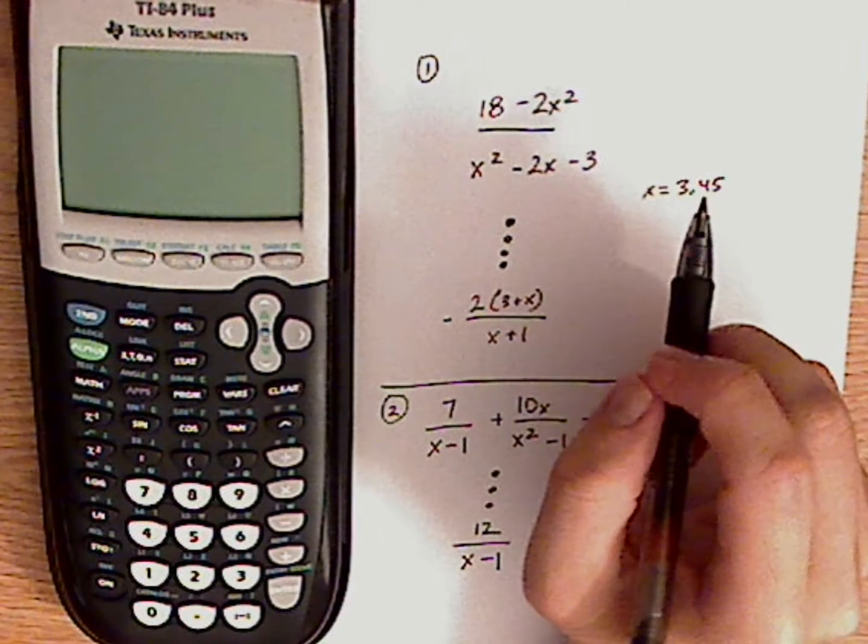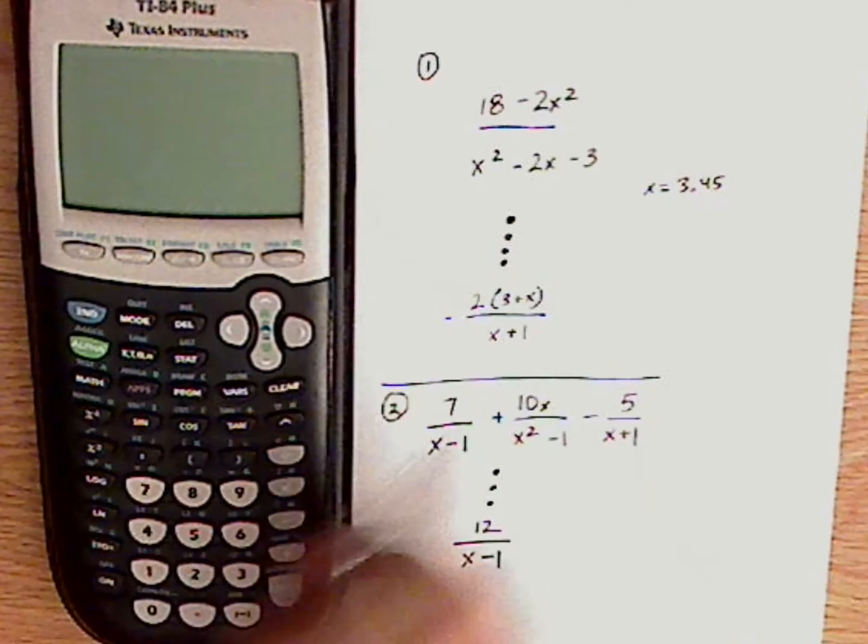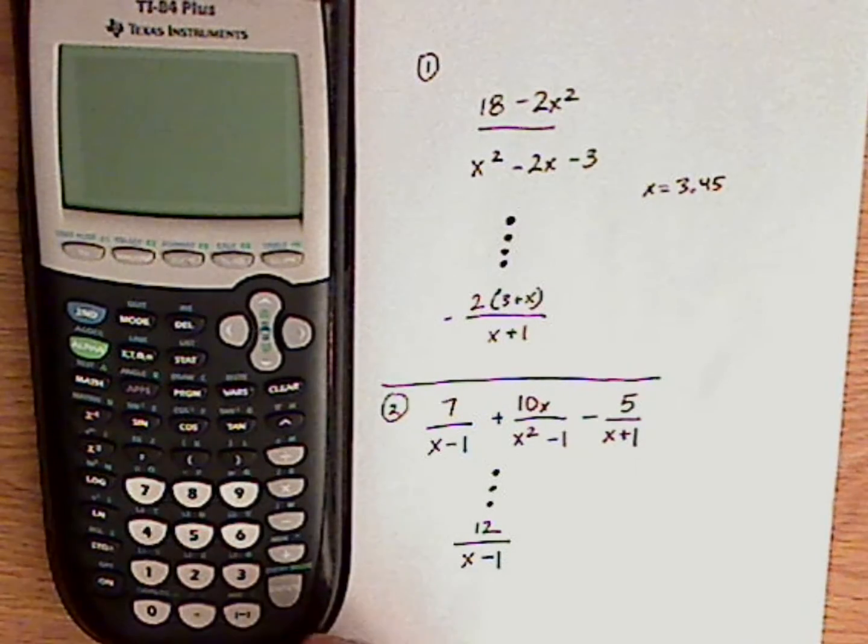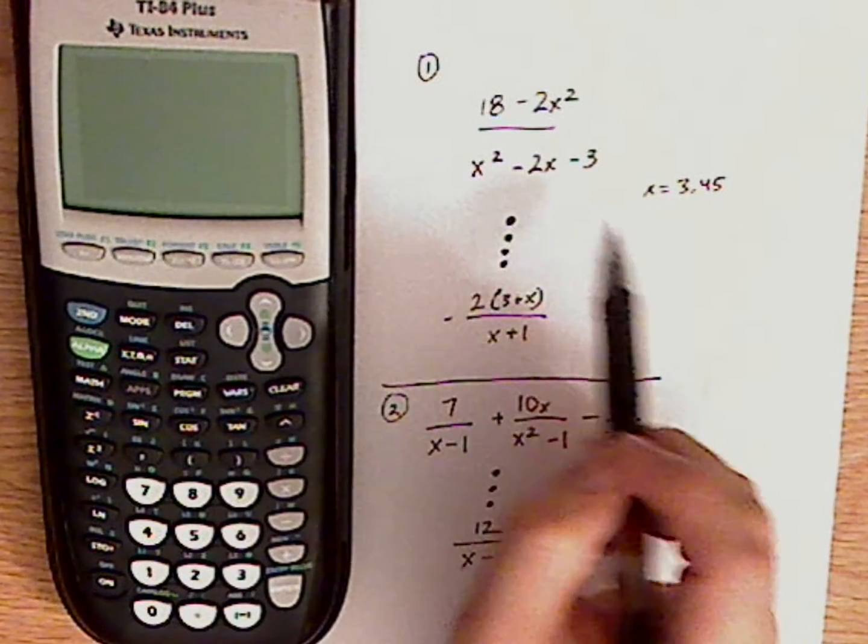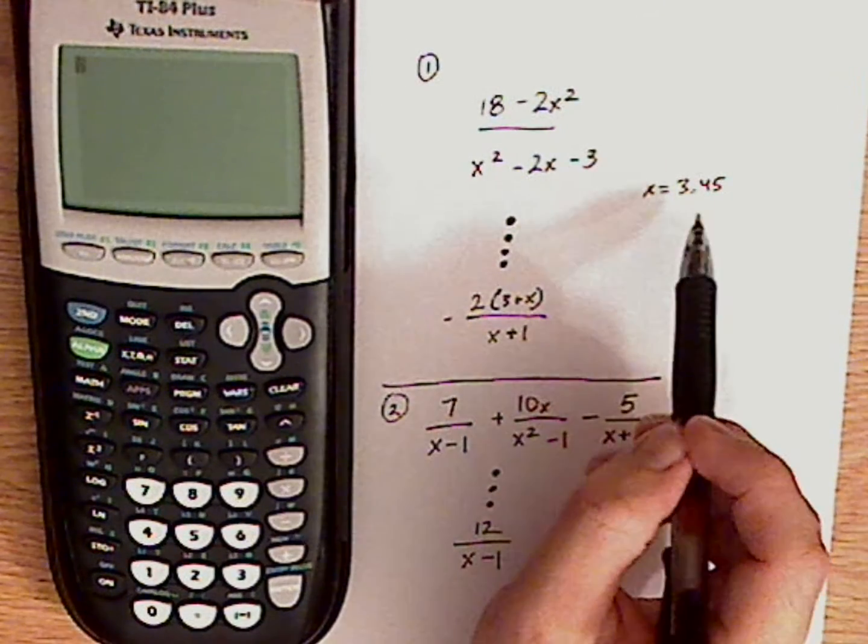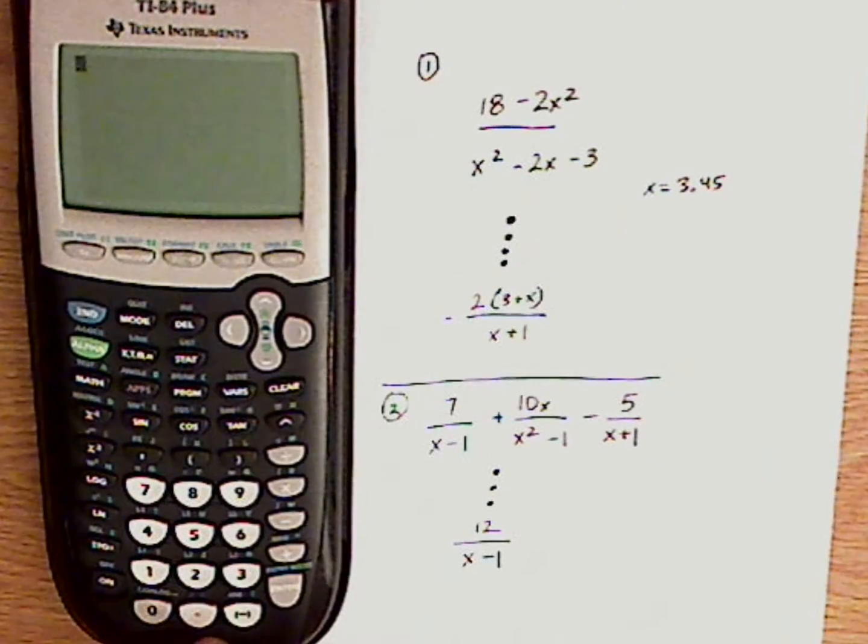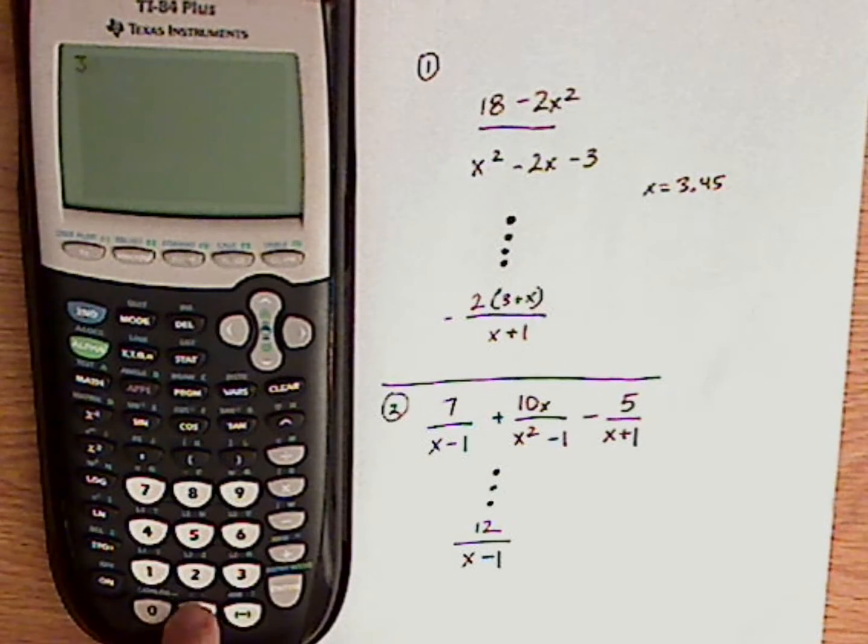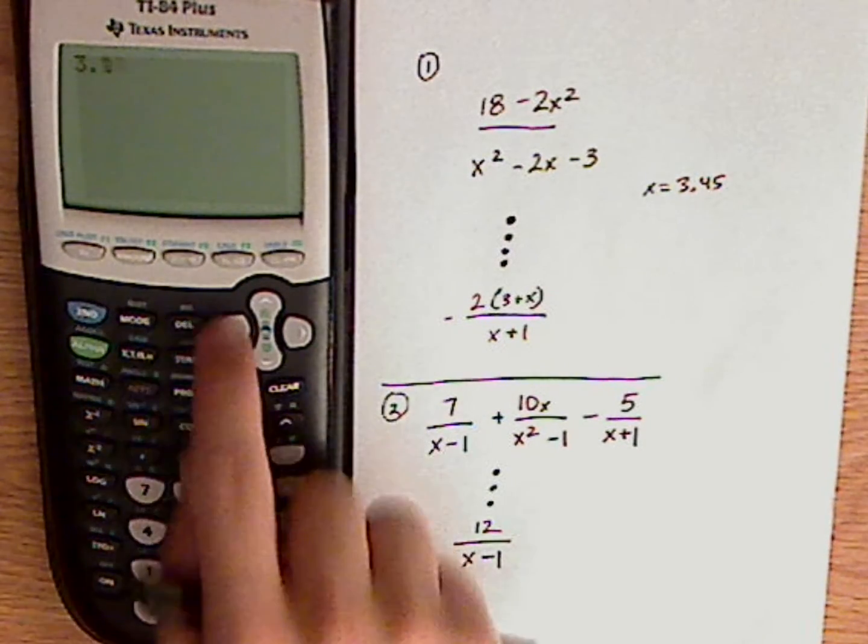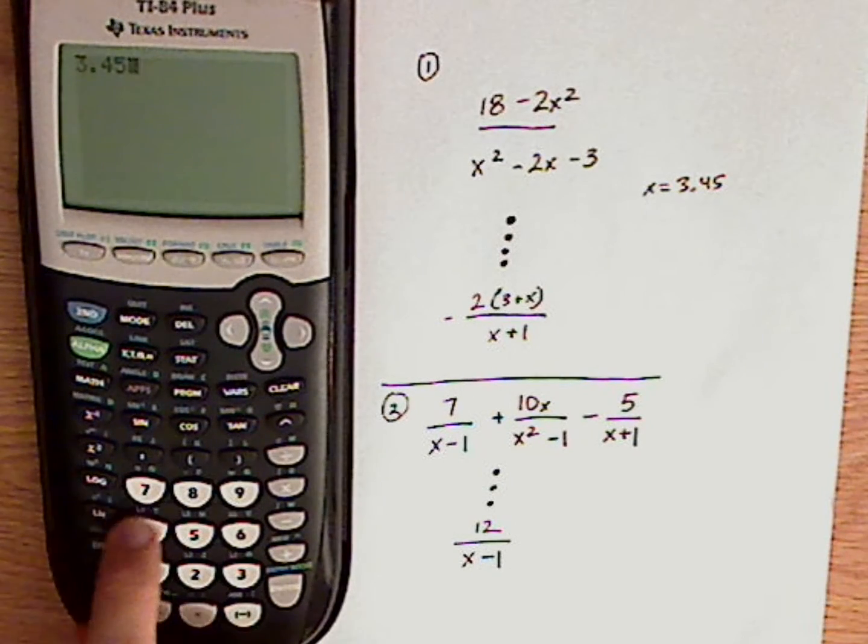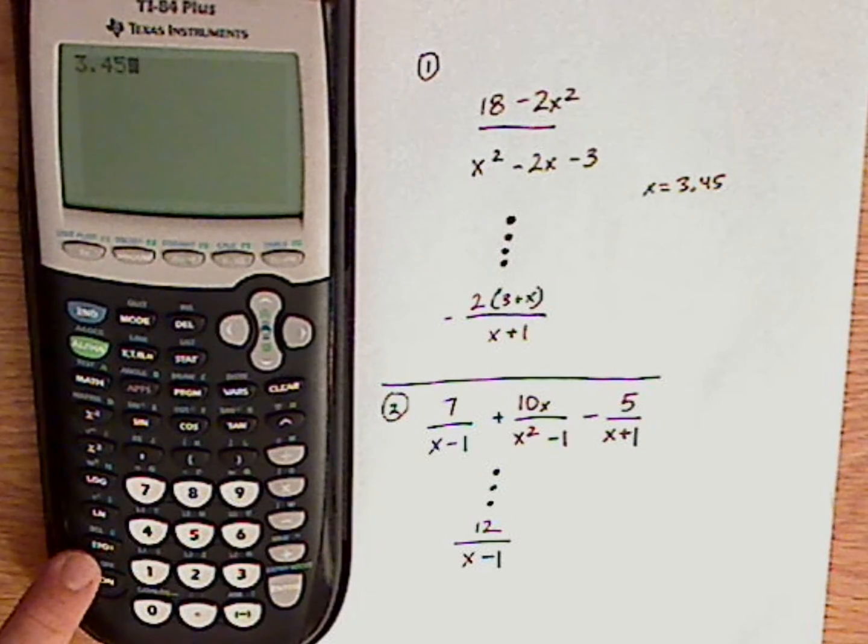And it could be any x, it doesn't matter. Now what you want to do first is store this as x. So to do that, you have 3.45. Press the store button, which is right here.